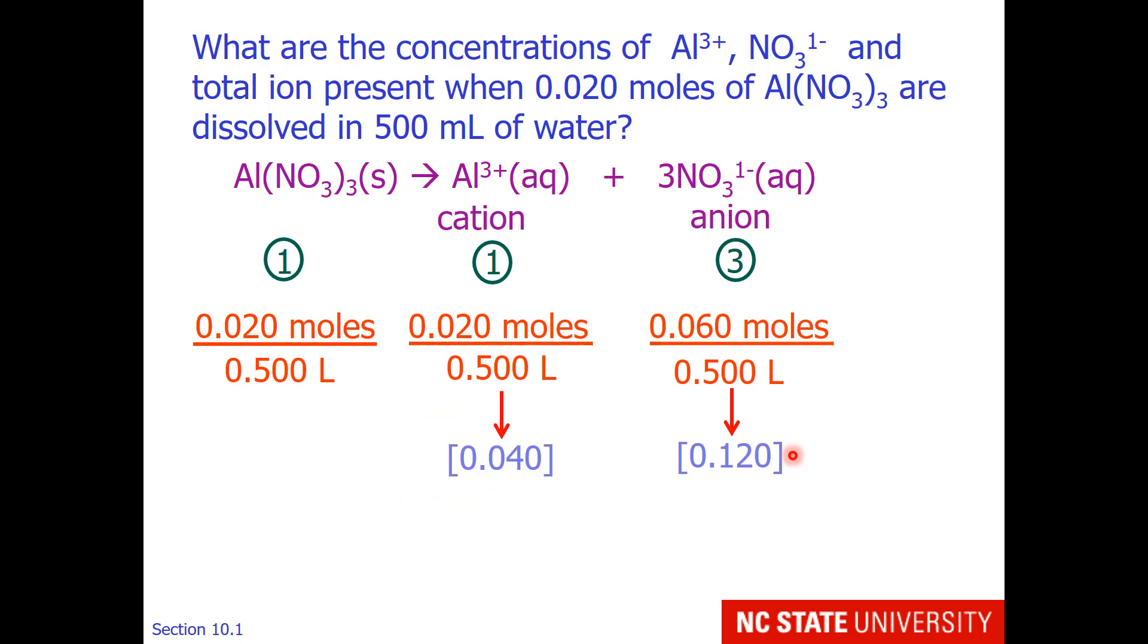So working this math I have 0.04 molar of the aluminum and 0.12 molar of the nitrate. I feel like there's a quicker or easier way to do this though, and that's to find the original concentration and then apply the stoichiometry. The original concentration, if this were to dissolve without breaking apart, would be 0.04 molar.